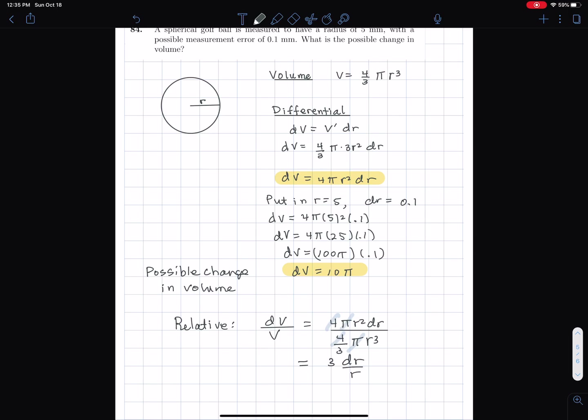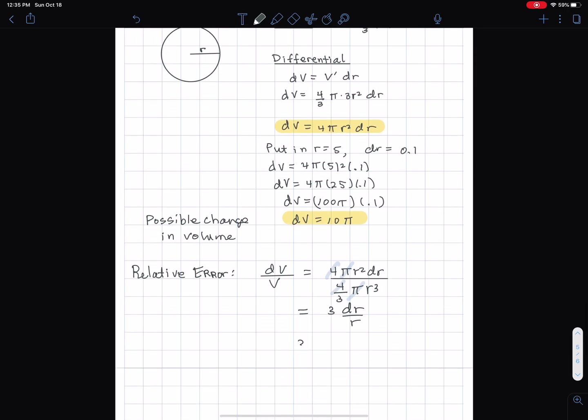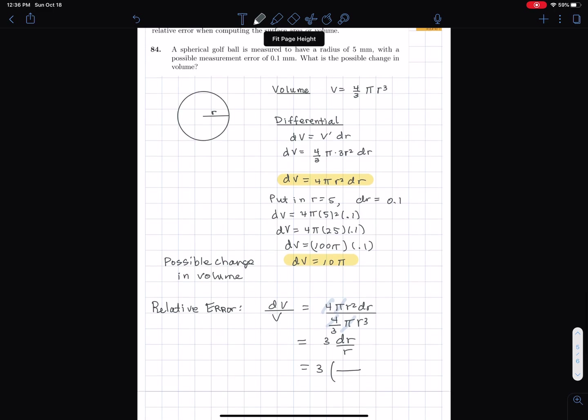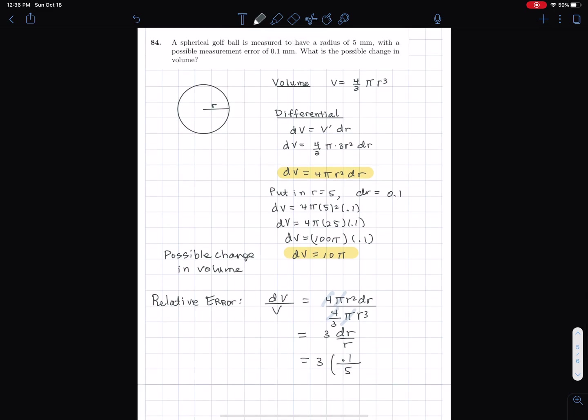So what this is saying is that the relative error in volume is three times the relative error in the radius. So that's going to be three times dr over r. Well, dr is 0.1 and r is 5.